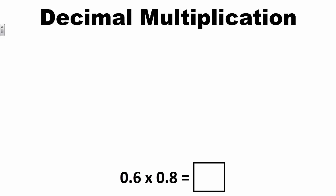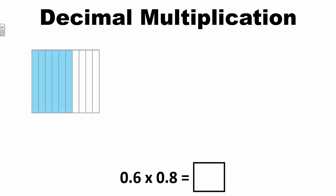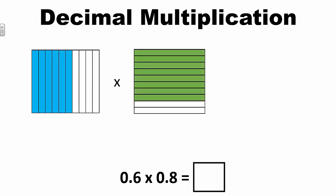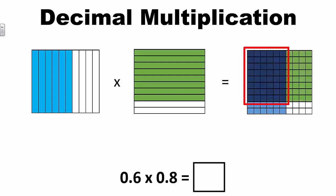Let's look at an example of how to model a decimal-by-decimal computation problem: 6 tenths times 8 tenths. In this problem, we are multiplying to find 6 tenths of 8 tenths. We can show this problem by using grids. In the first model, I am showing 6 tenths of a whole, and in the second model, I am showing 8 tenths of a whole. We know that the product of 6 tenths and 8 tenths will result in hundredths. If I combine the two grids, the product will be the overlap of the two. We see that 48 hundredths are shaded dark blue, indicating that 6 tenths times 8 tenths equals 48 hundredths.